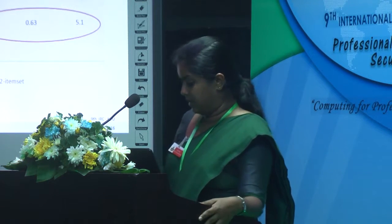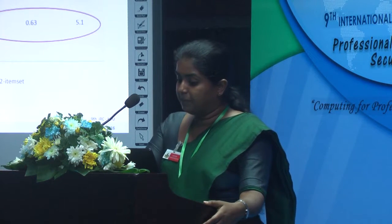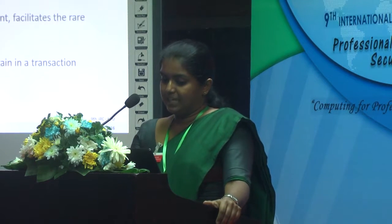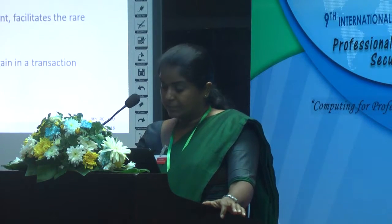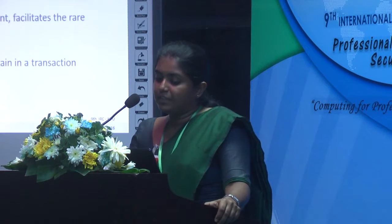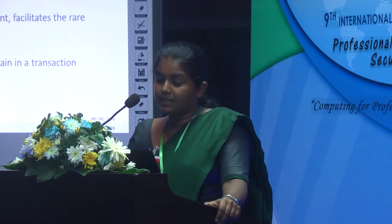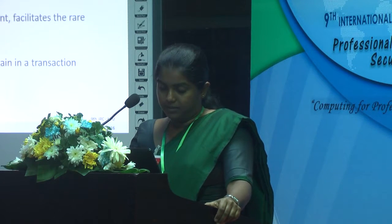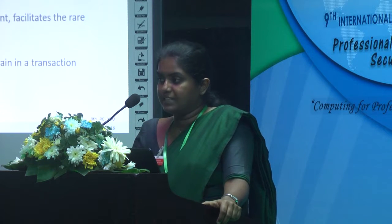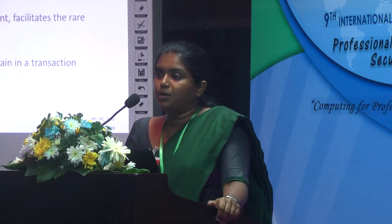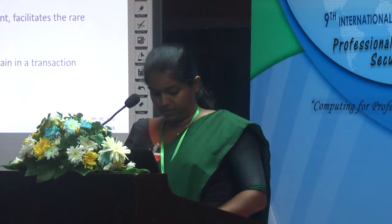The rule generated by our algorithm shows that item B is a frequently bought item and item E is a rarely bought item, considering the support values. This demonstrates that our algorithm addresses all three identified problems: it reduces unnecessarily generated rules — saving storage space and cost — it accommodates rare items as well as frequent items through a new profit variable, and with this newly introduced constraint, it delivers maximum profit compared to other algorithms.